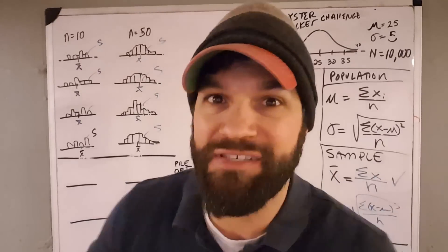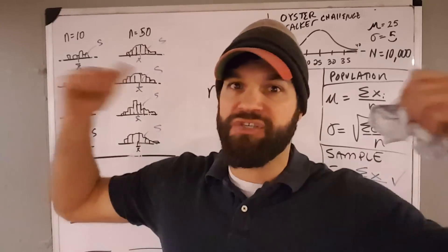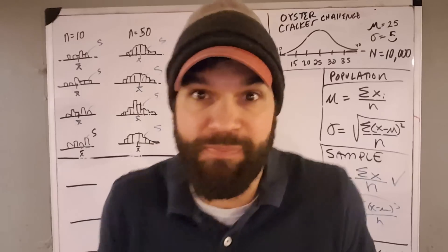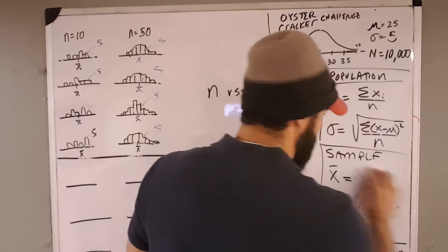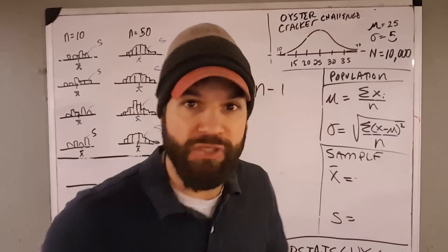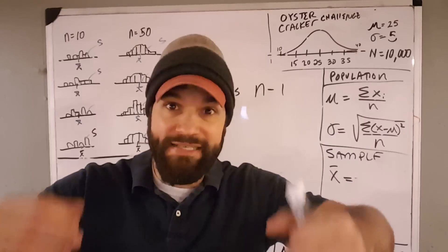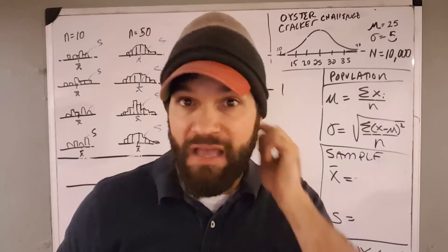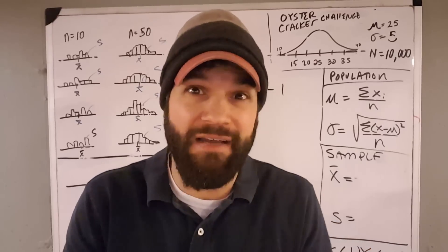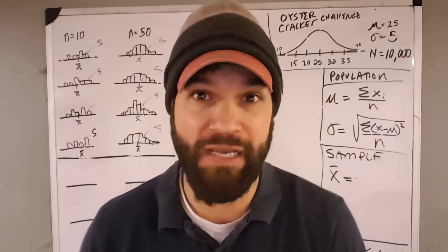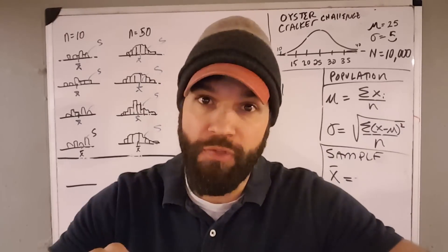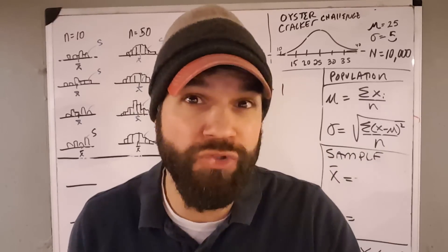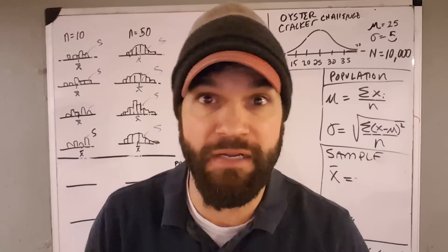But if you only have a sample and you're trying to guess the population's standard deviation by using the sample — and that's why we take samples. We always take samples because we're curious about the population, we're making an inference. When I take a sample and use that formula, I end up getting a number that's too small. They both want to find the population standard deviation: one does it perfectly, and the other does a pretty good job when you add the fudge factor in.